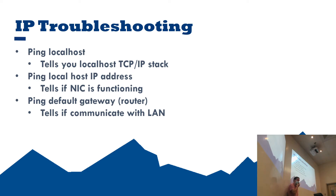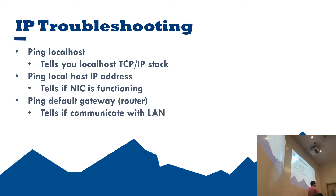Next, ping your local host IP address — your private IP address. If you're on a computer in here, it should be a class A address, something like 10.something. That's going to tell you if your network interface card is functioning. When you ping your local IP, you're going out to the NIC, the NIC recognizes its own IP address, and the packet doesn't leave the NIC. If you don't get a response, your NIC may have a problem.